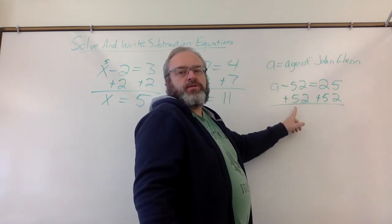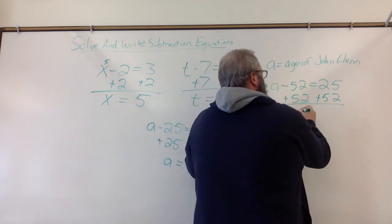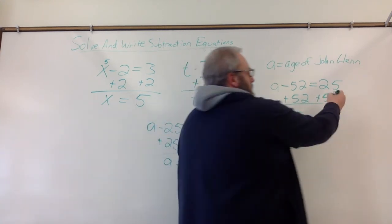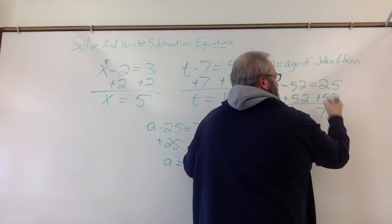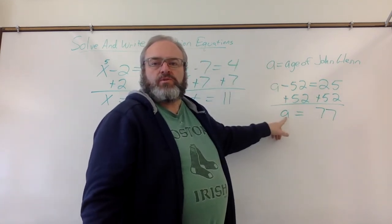Minus 52 plus 52 are opposites. They cancel out, leaving a, the age of John Glenn. 25 plus 52 is 77.